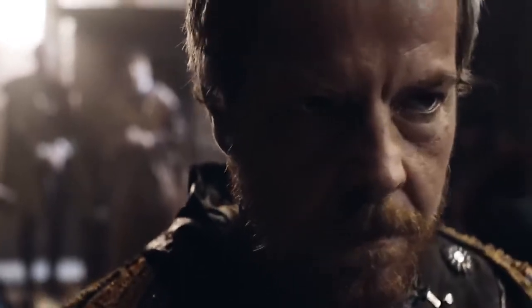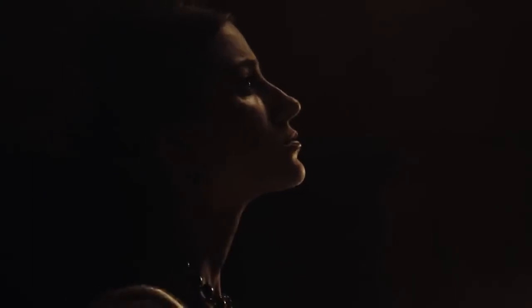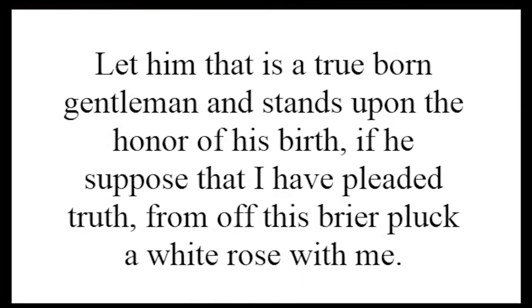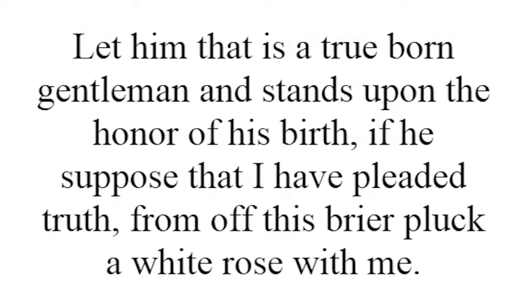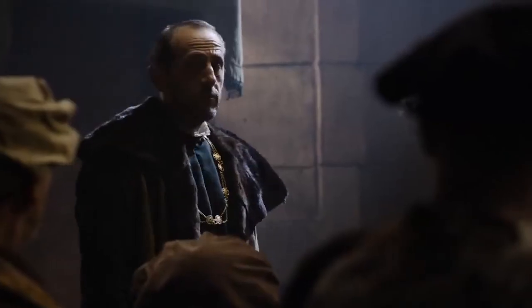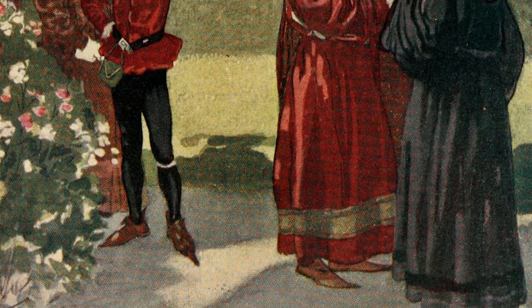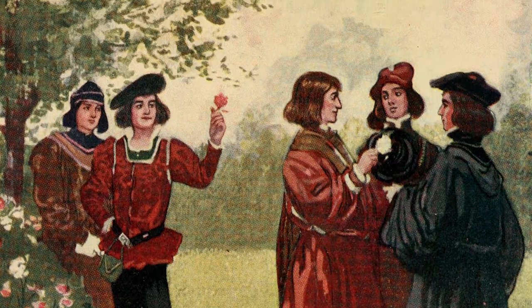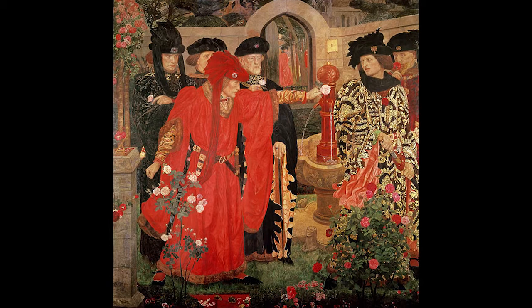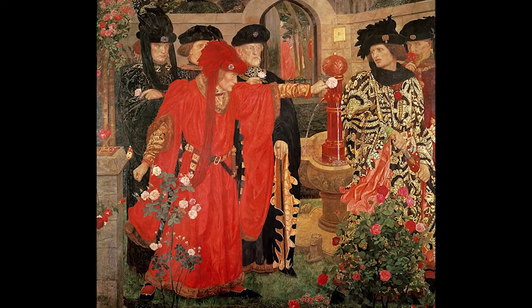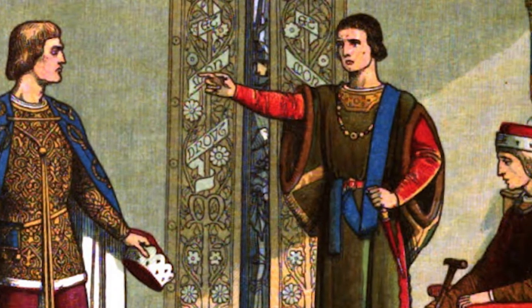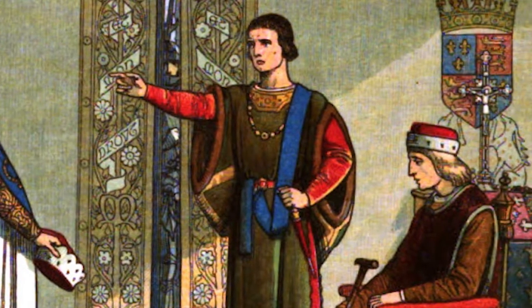Many of the English nobles were afraid to speak out about whom they supported, so one day Richard asked them to give a sign to show whose side they were on. 'Let him that is a true-born gentleman, and stands upon the honour of his birth — if he supposes I have pleaded truth — from off this briar, pluck a white rose with me.' Saying that, he pulled a white rose which grew on a nearby bush and stuck it on his cap. Straight after, the loyalist Duke of Somerset sprang forward, tearing forth a red rose from another bush, saying: 'Let him that is no coward nor flatterer, that dare maintain the party of truth, pluck a red rose from off this thorn with me.' Then one after another, all the nobles present plucked red or white roses. Those who were for Lancaster wore red roses in their caps, and those who were for the Duke of York wore white roses in theirs. The fighting in court became fiercer and fiercer, until at last Margaret successfully convinced her weak-willed husband to dismiss Richard and appoint the more agreeable Edmund Beaufort, the powerful Duke of Somerset, to the role instead.